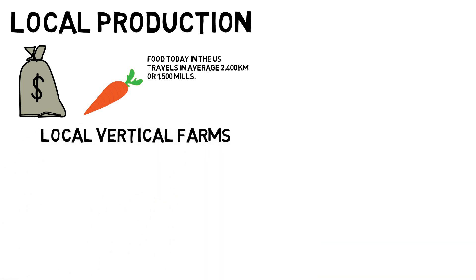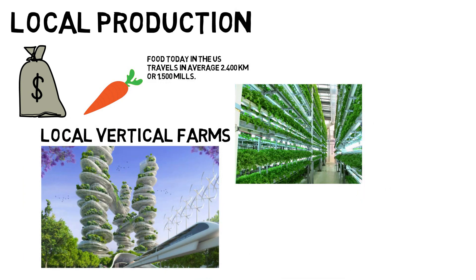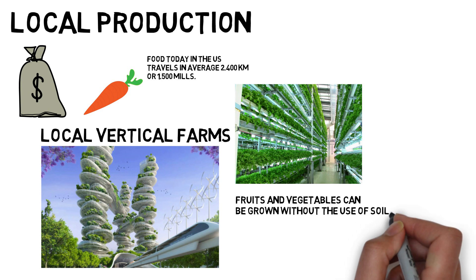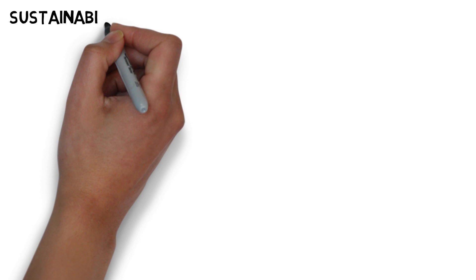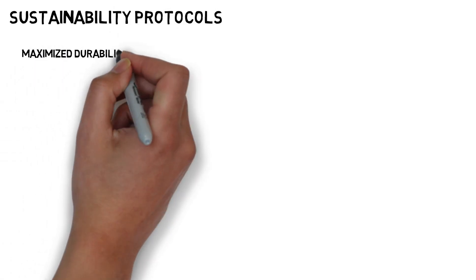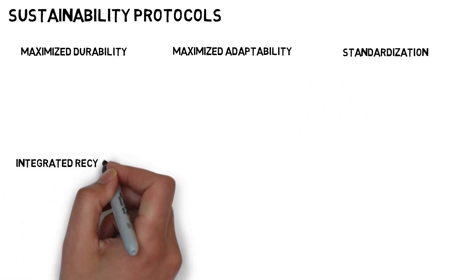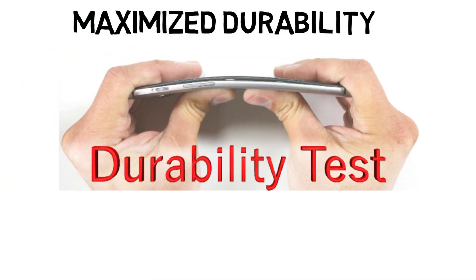In an RBE, fruits and vegetables will most likely be grown in vertical farms. Vertical farms take up much less space. Fruits and vegetables can be grown without the use of soil or pesticides, and use only 5% of the water used in traditional farms. Sustainability is a central part of an RBE. That's why when designing a new product, it goes through a range of efficiency and sustainability protocols. Maximizing durability means making the product durable so it doesn't break down as fast as most products do today, resulting in less repair, production, recycling, and energy loss.